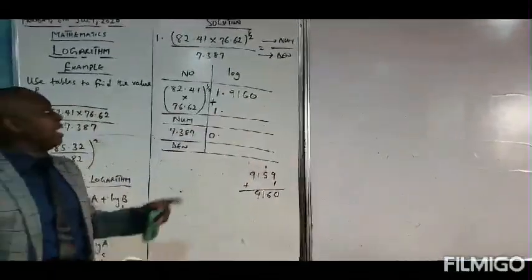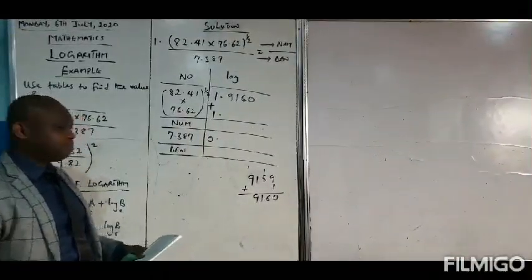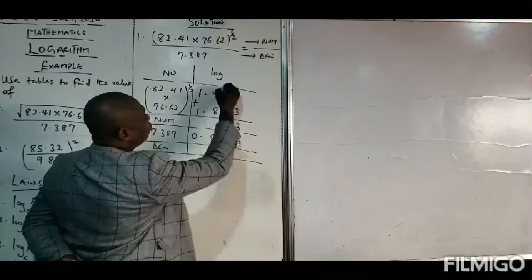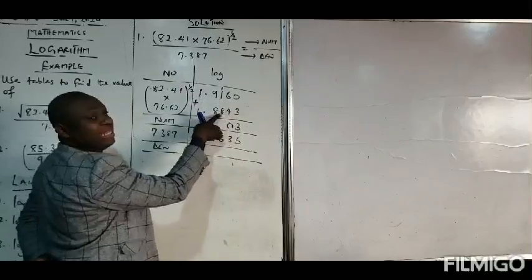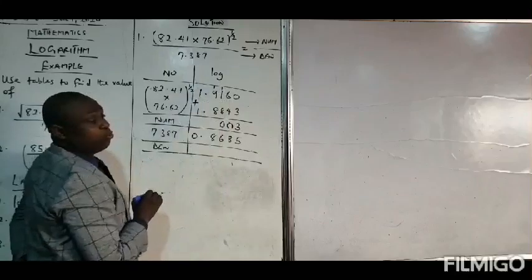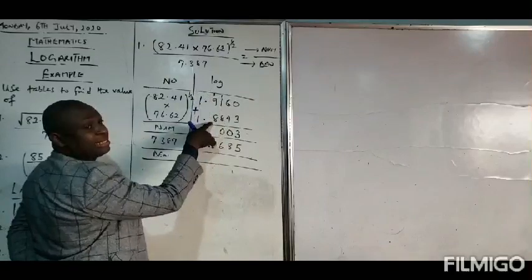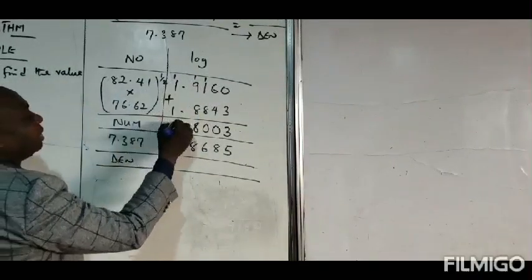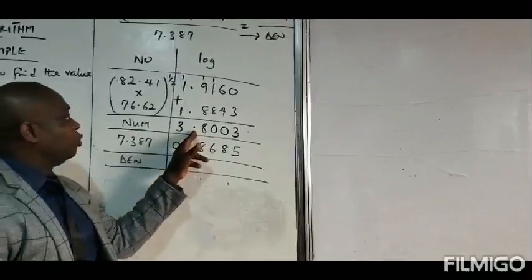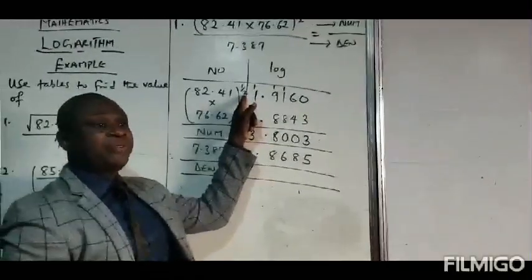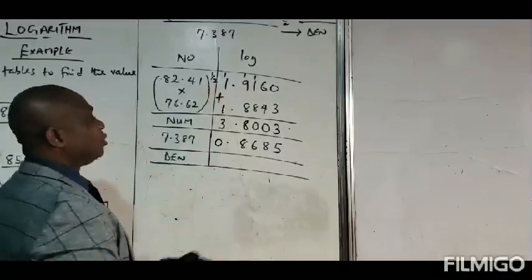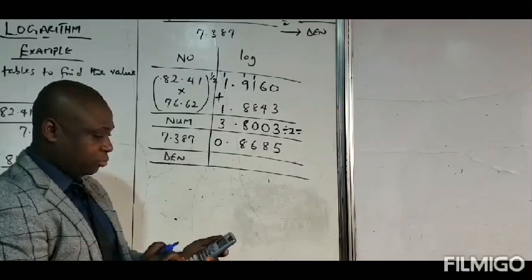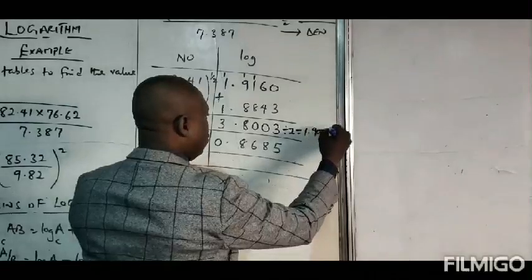For the second number, we add: zero plus three is three, six plus four is ten — put down zero, carry one; one plus one is two, two plus eight is ten — put down zero, carry one; one plus nine is ten, ten plus eight is eighteen — put down eight, carry one; one plus one is two, plus one again is three. Now this is not the final stage of the numerator — remember the numerator has an exponent of one-half, so we divide by two. Using a calculator, that gives us approximately 1.9002.